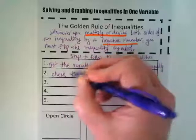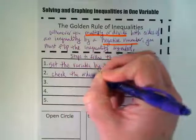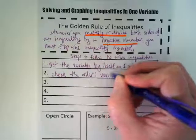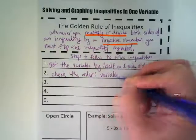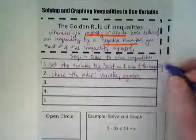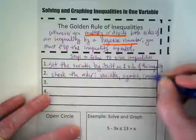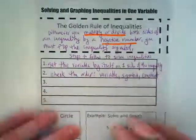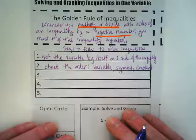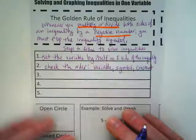And then once we've done that, we want to check the order. Think about our flip-flops, we want the variable first, we want the inequality symbol second, and we want the constant on the right because that helps us with graphing as we saw yesterday.